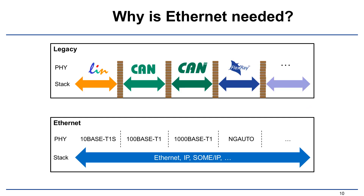So why Ethernet, you might ask? Because there are a lot of legacy technologies out there. With legacy technologies, you have technology-specific files and technology-specific software stacks. So when you want to change the speed grade, you need to change both the PHY and the software stack. Ethernet comes with speed grade-specific PHYs, but the software stack is always the same, so it can be reused. When you want to change the speed, you only have to change the PHY and keep the software stack.